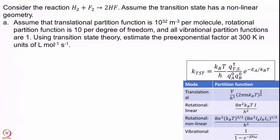Hopefully you have solved it on your own and you have a number. Now we are going to do it together. As always, when formulas are needed, they will be provided — you do not have to memorize formulas. We have to essentially figure out the partition functions. K_TST will be equal to k_B T over h times the ratio of partition functions.